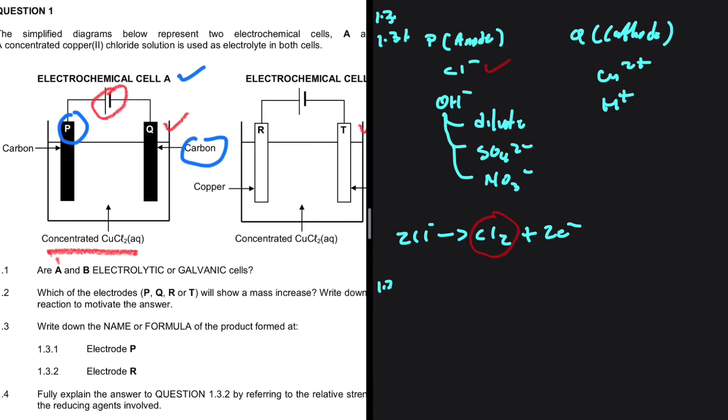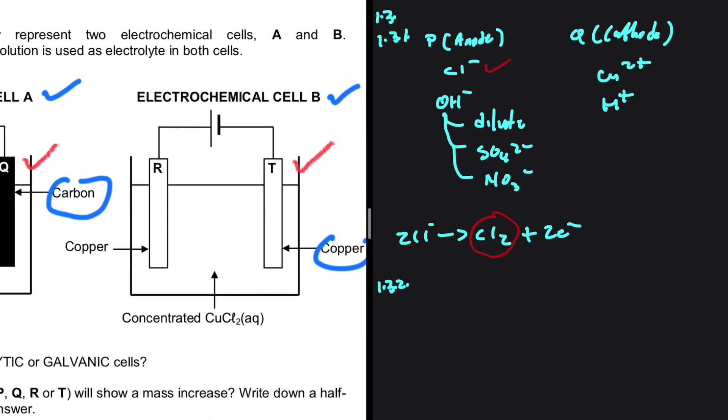Let's go ahead and do 1.3.2. We're looking for the name or formula of the product formed at electrode R. Electrode T is the cathode. So electrode R is our anode. What anions are we going to have at the anode of electrochemical cell B? This is where it gets interesting and gets complicated.